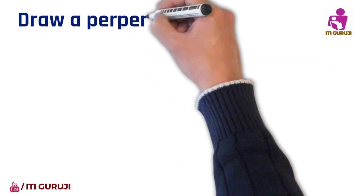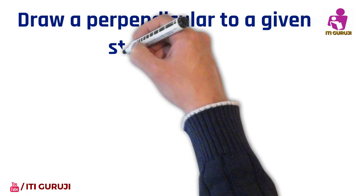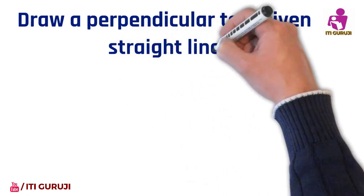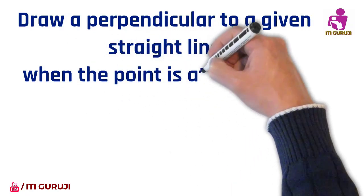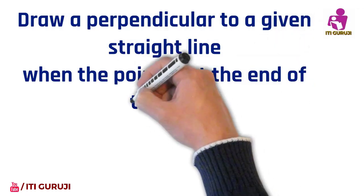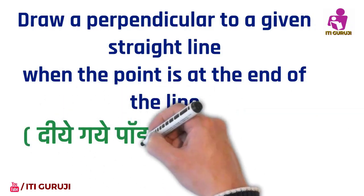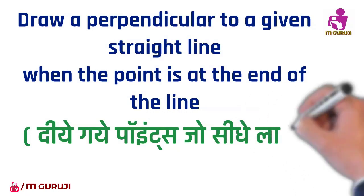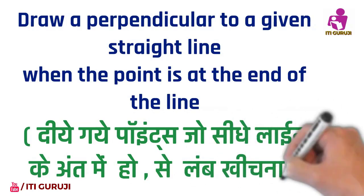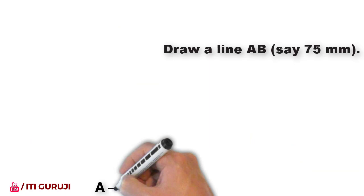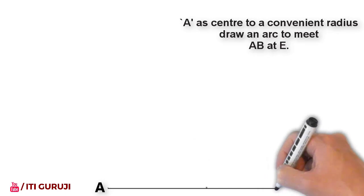Draw a perpendicular on a given straight line. The point is at the end of the line. Here we are seeing the line because the page is complete.